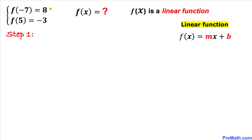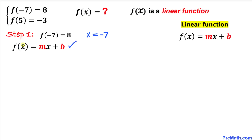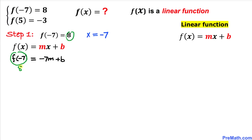Here's our very first step. Let's focus on the first equation: f of negative 7 equals 8. Here we can see our x value is negative 7, so x equals negative 7. In this linear function, wherever we see x, we replace it by negative 7. So this equation becomes f of negative 7 equal to negative 7m plus b. We know f of negative 7 equals 8, so we replace it: 8 equals negative 7m plus b. Let's call this equation number 1.